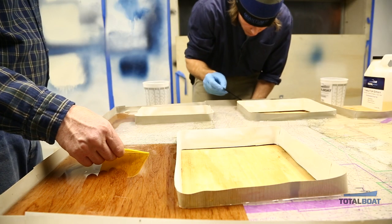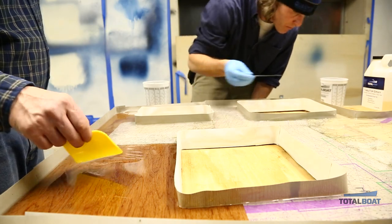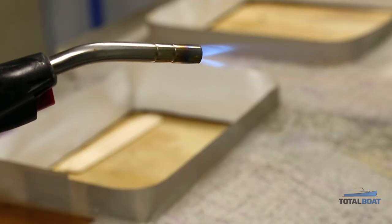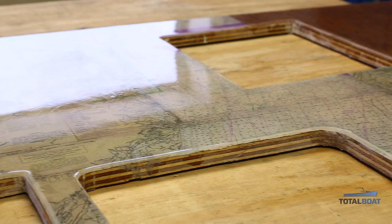The last step is to use a torch if there are bubbles in the tabletop. Sometimes there are bubbles as a result of mixing when you get some air in the resin. The solution is to take a torch and run it about two to three inches above the tabletop. It will heat up the surface, pop the bubbles, and even out the gloss.